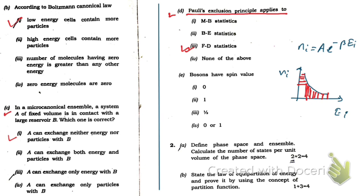Next, bosons have spin value. Bosons have integral spin value, either zero or one, it cannot have half. So zero is also correct, one is also correct, so the correct option will be four: zero or one.